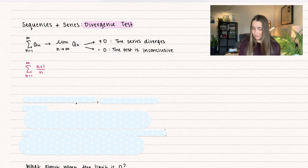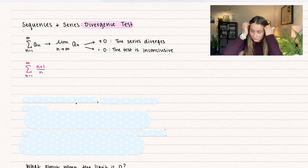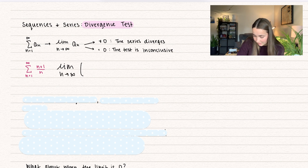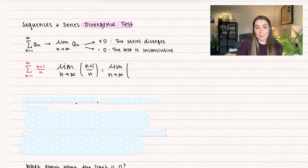Let's talk about our different options. First, when the limit is not equal to 0. Take the series from n equals 1 to infinity of n plus 1 divided by n. We take the limit as n goes to infinity of our sequence, which is n plus 1 divided by n. We can rewrite it by separating it into two fractions: n divided by n, plus 1 over n.